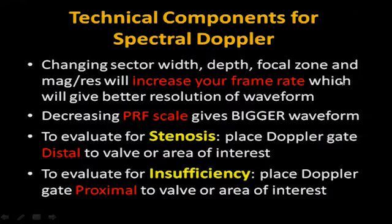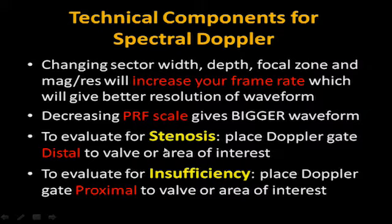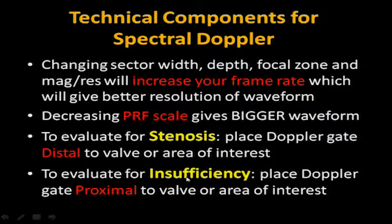You want to change sector width, depth, and focal zone. Make sure what you're looking at is at the center and move your focal zone there. Increase your frame rate for better waveform resolution. Decrease your PRF to get a bigger waveform. To evaluate stenosis versus insufficiency: place your Doppler gate distal to the valve for stenosis, and proximal to the valve for insufficiency. Think about what information you're trying to get — it tells you where to place your gate.